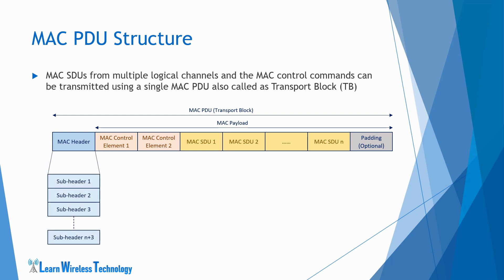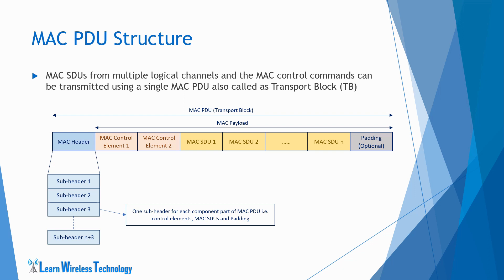The header describes the format of the PDU itself. It consists of a number of subheaders — there is one subheader for each MAC control element and each MAC SDU in the PDU. Additionally, there can be a subheader to specify padding as well. So the header is composed of multiple subheaders, one for each component part of the MAC PDU: control elements, SDUs, and padding.